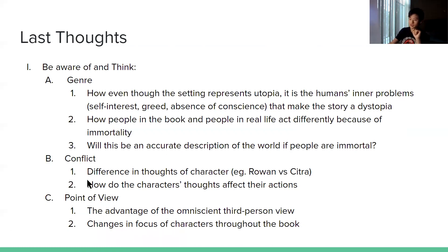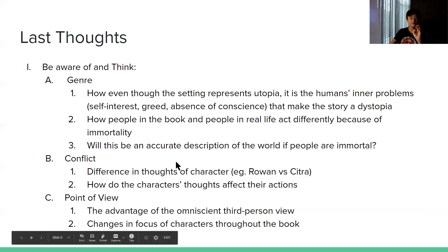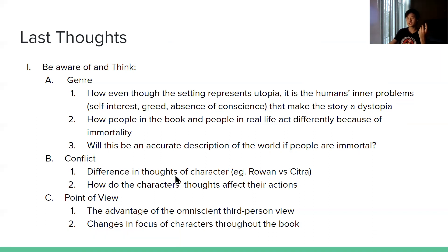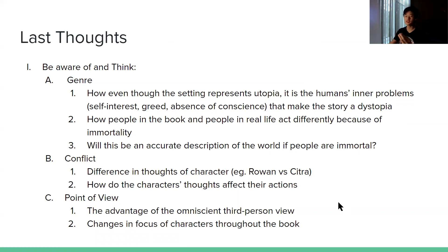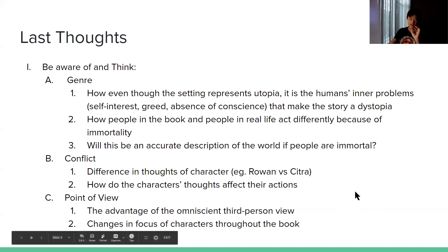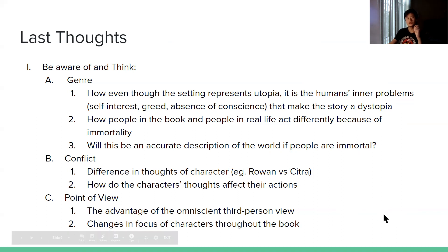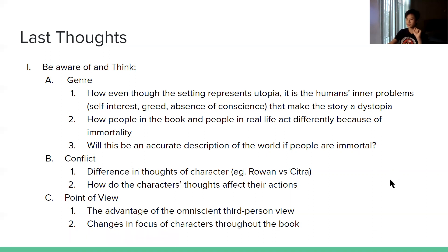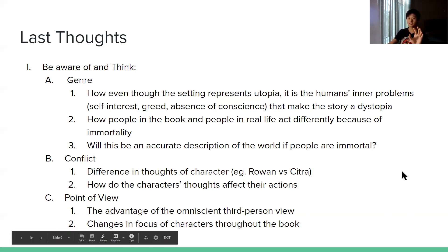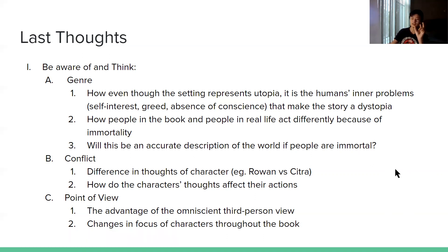Also take a look at the conflict. The differences in thought between characters like Rowan are very prevalent because they have different upbringings and different personalities. Look at how their personalities and thoughts affect their actions. Also, take care to look at the different points of view. Because the book is written in an omniscient third-person view, you need to take advantage of the different thoughts and different lenses you see into the story — and see how the changes in focus of characters throughout the book will affect how the story is told.